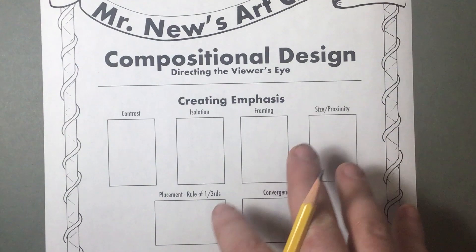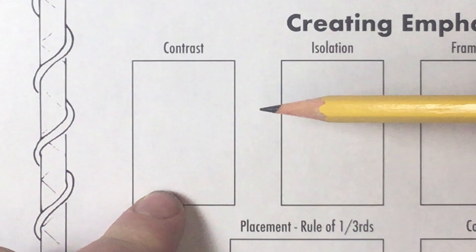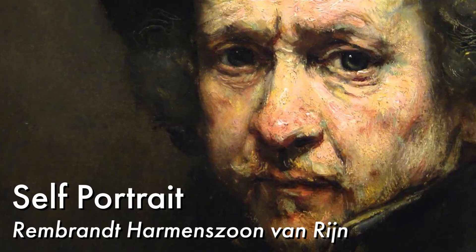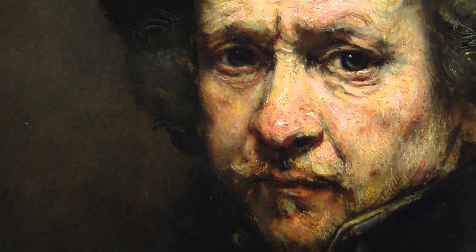Zooming in onto our first box, this is under the creating emphasis headline. We're talking about contrast. To get a good example of what contrast looks like, let's take a look at Rembrandt's self-portrait. Rembrandt painted many self-portraits during his lifetime, and partly because of these, he became known as the painter of light.